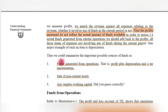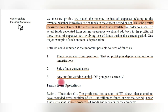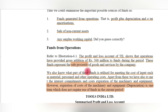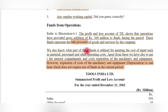So the sources of funds are: funds generated from operations (cash from sales), sale of fixed assets, and any surplus cash carried over from the previous cycle. These are the three ways in which cash can be generated for funding the day-to-day operations of the business.